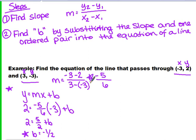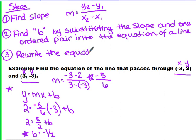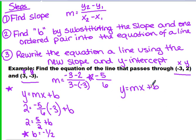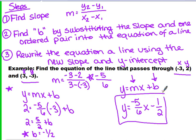So we have the B value and we have the M value. Now we're going to rewrite the equation of a line using the new slope and Y-intercept. Our equation of the line is Y equals MX plus B. We just substitute them in: Y equals negative 5 over 6 times X minus 1 half, because that is the new B value. And that is our equation of the line.